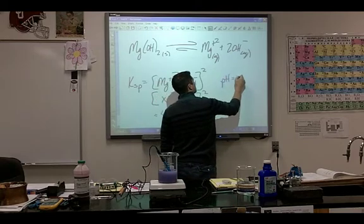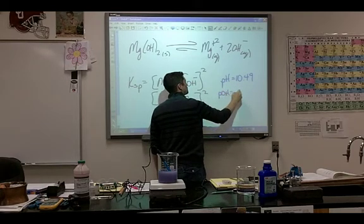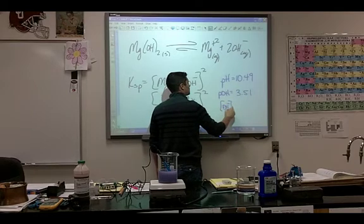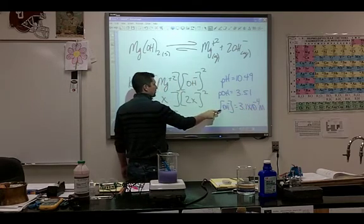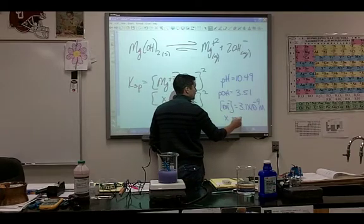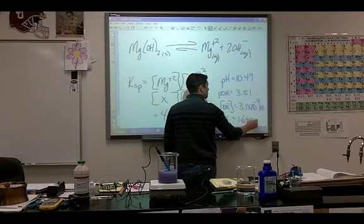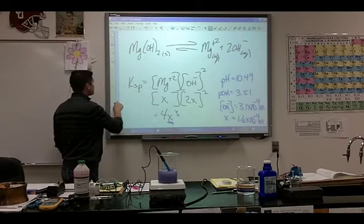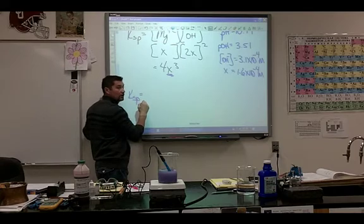10.49. 10.49. So the pH was 10.49. I can subtract that from 14. And that will give me what? The pOH. Which is? 3.51. 3.51. Okay. If I press second log negative number, that will be my OH. What do you get for that? 3.1 times 10 to the negative 4. And then what do I need to do to that number? Divide it by 2. Divide it in half. And square root it. Hold on. Divide it in half first. What do you get? 1.6 times 10 to the negative 4. That is my X. So now I'm going to take that and I'm going to plug it in here, correct? Mm-hmm. Okay. Somebody plug it in there and cube it and then multiply it by 4. Tell me what you get for your KSP. 1.6 times 10 to the negative 11.